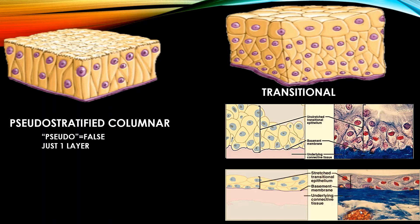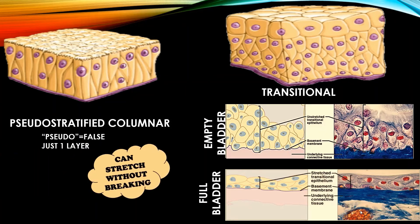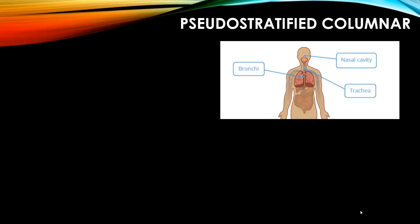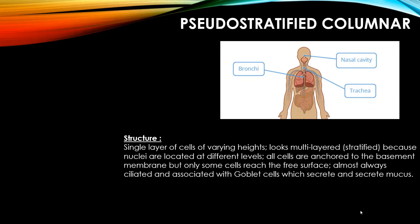Transitional epithelium is a special type of stratified epithelium that can stretch without breaking. It is found in the bladder, which must stretch as it fills with urine. In an empty bladder the cells are cuboidal in shape, but as the bladder fills with urine, the epithelial cells stretch and become squamous in shape. Because the cells change shape — transition — it is called transitional epithelium.